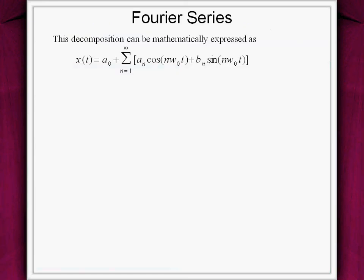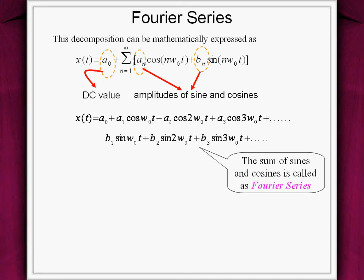This decomposition can be mathematically expressed as shown. The constant term A0 corresponds to the DC value of the signal. And the coefficients An and Bn tell us the amplitudes of sine and cosine terms. The sum of these sine and cosine terms is called the Fourier series.